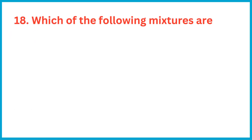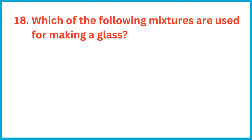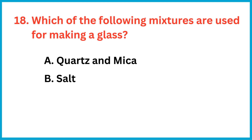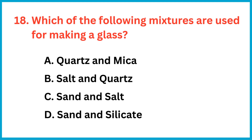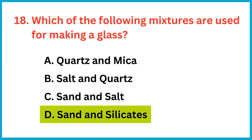Which of the following mixtures are used for making glass? The correct answer is option D: sand and silicates.